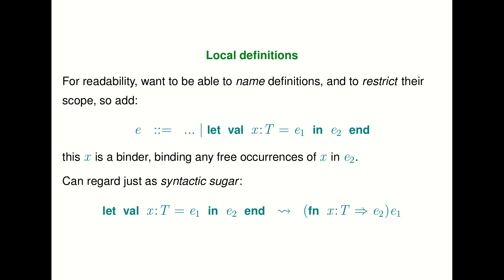It turns out to be extremely easy. We're going to extend our grammar with a form that says: let val x : t = e1 in e2. What this means is we take the value of expression e1, bind it to variable x, and then evaluate e2. We can regard this purely as syntactic sugar: let x = e1 in e2 has the same effect as introducing a lambda abstraction fn x : t => e2 and immediately giving it the argument e1.